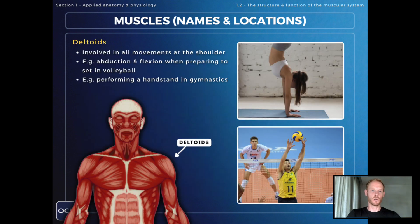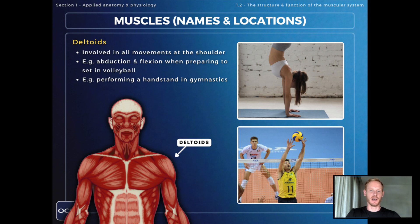First we have the deltoids or shoulder muscles, which are involved in all movements at the shoulder. Some good examples of their use include performing a handstand in gymnastics and creating abduction and flexion when preparing to set in volleyball.